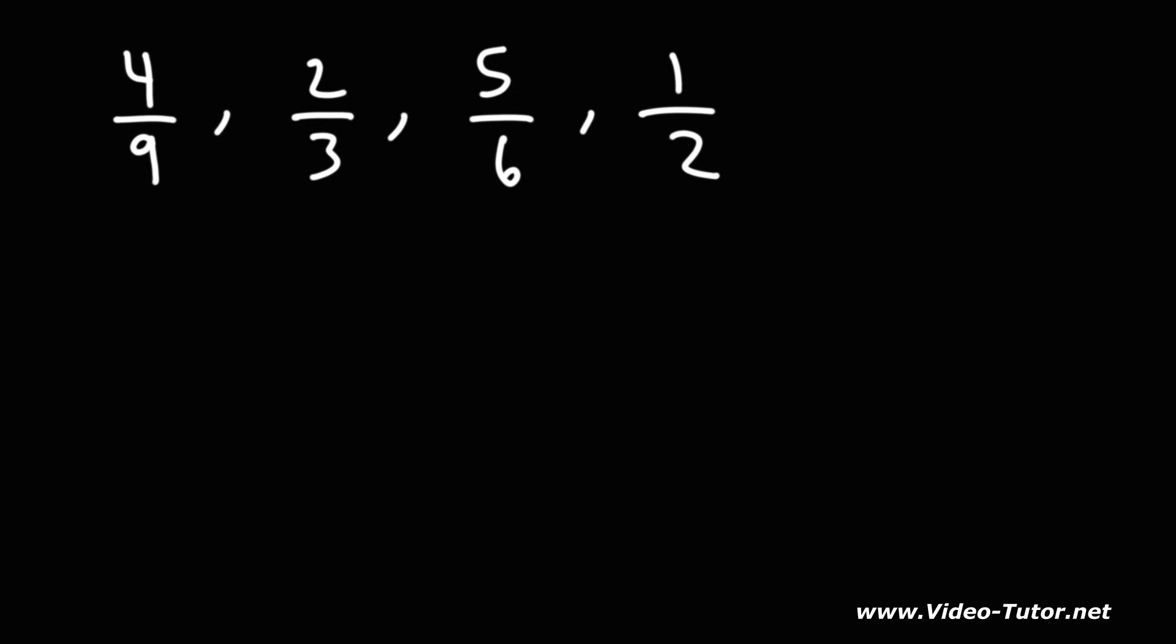In this lesson we're going to talk about how to rank fractions from greatest to least, or from high to low. So how can we do this? The first thing we need to do is get common denominators, so we need to find a common multiple of 2, 3, 6, and 9.